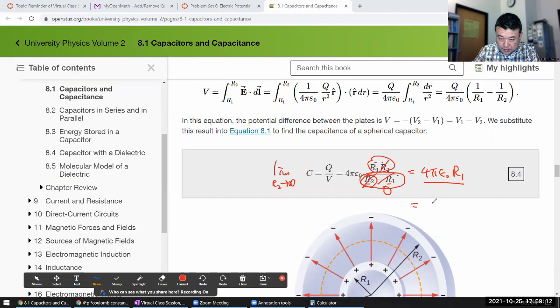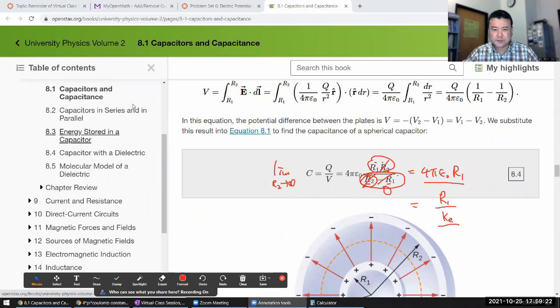So, you end up with 4 pi epsilon naught R1. And that is the capacitance of a single spherical conductor. Or, I guess, in terms of the units I'm asking you to consider using is R1 divided by Coulomb constant. Oh, I guess I've almost done this question. So, let's just finish it.